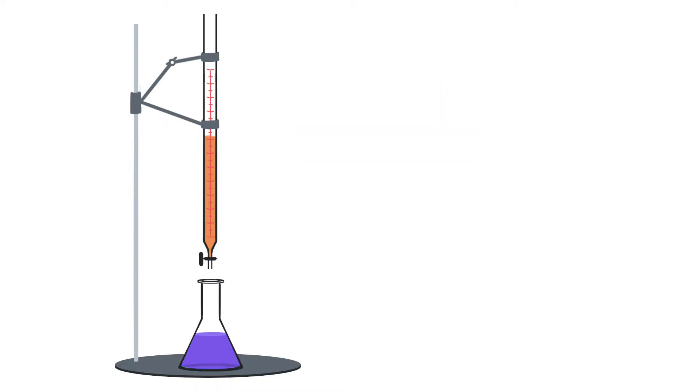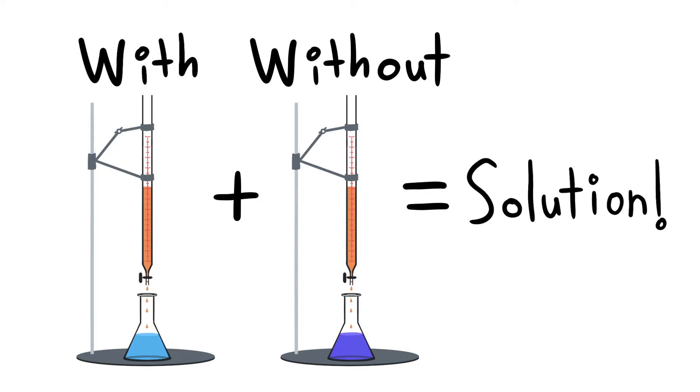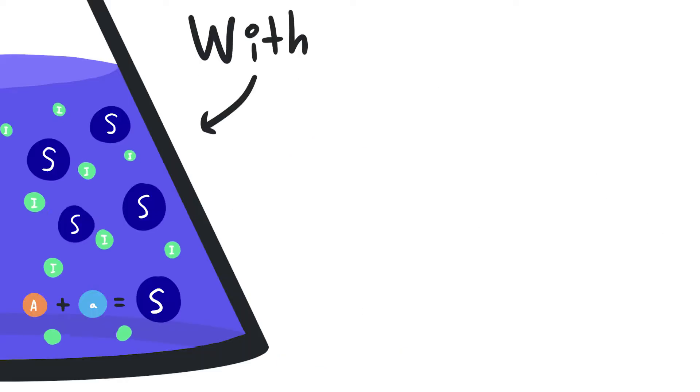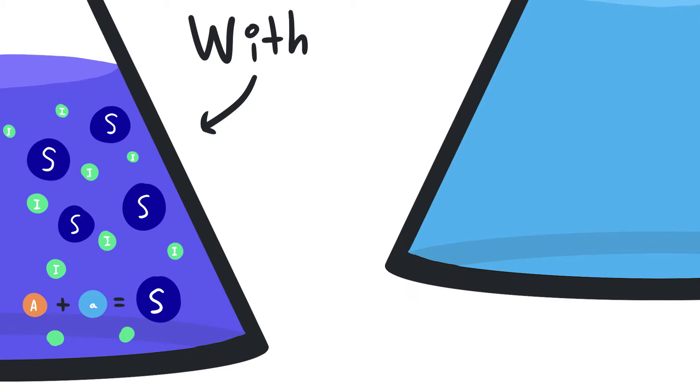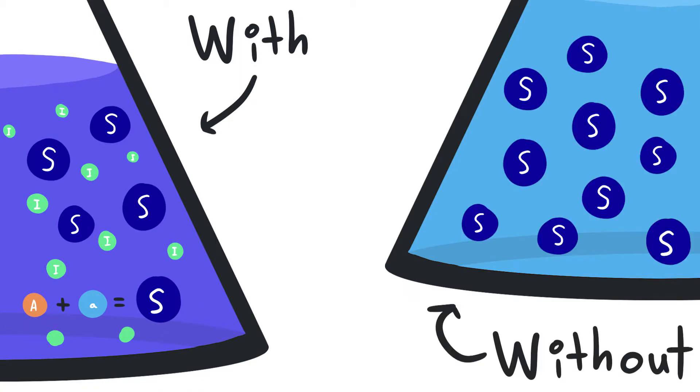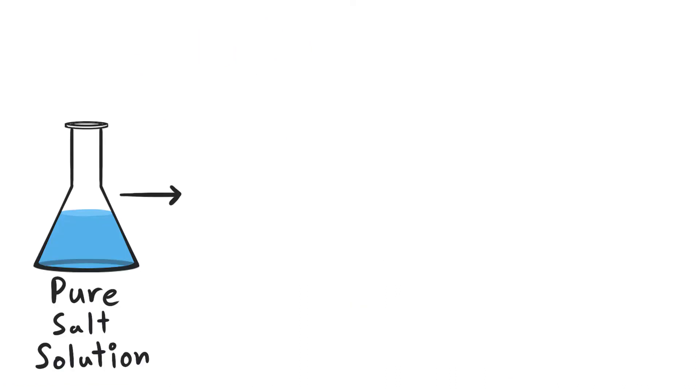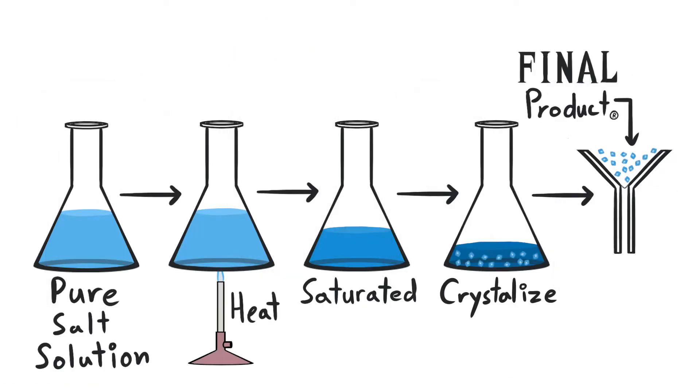The keyword to remember for titration is doing it twice. Do it the first time with indicator to determine how much exact chemical to add and repeat the second time without indicator to prevent the salt product from contamination by the indicator. Last but not least we will extract the dry pure salt from the solution using crystallization.